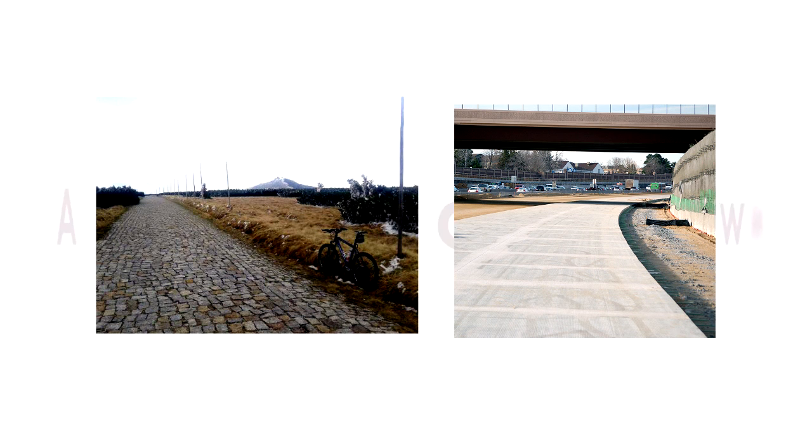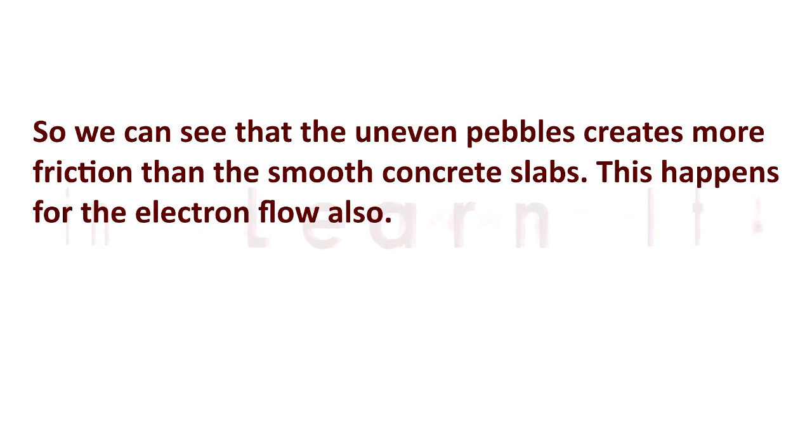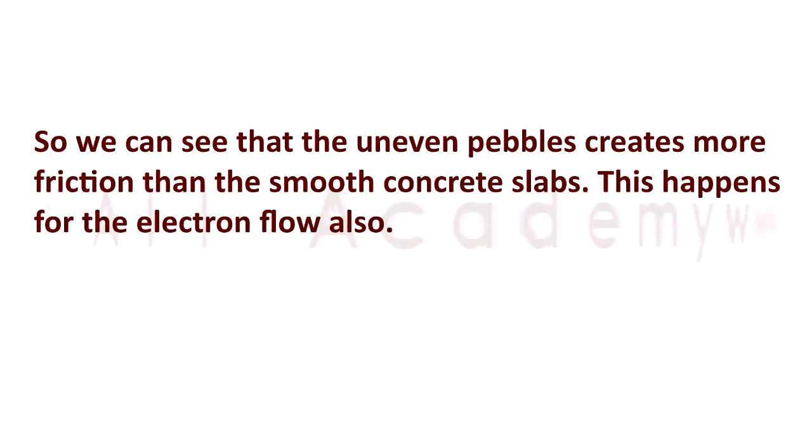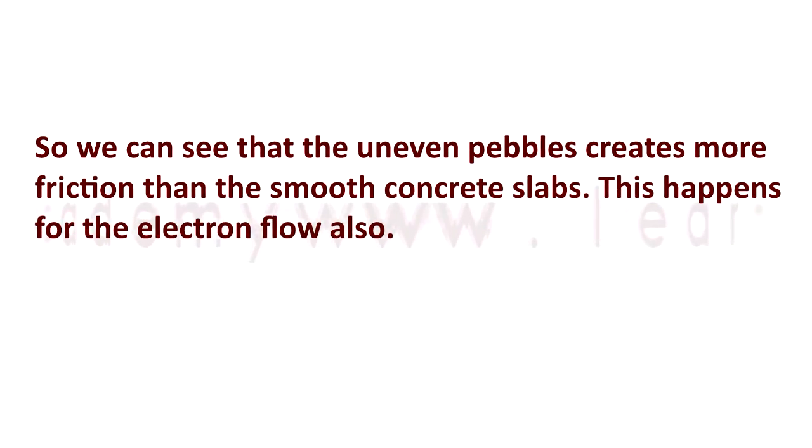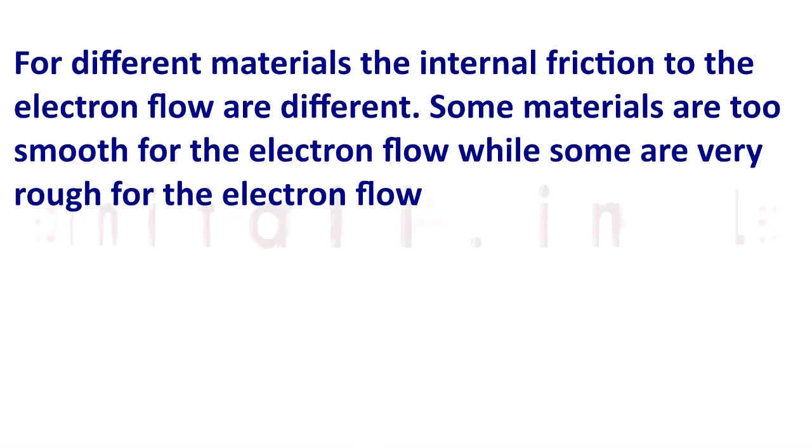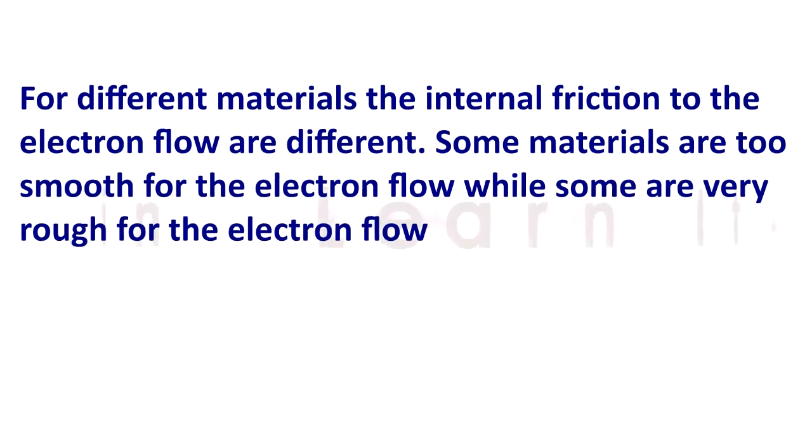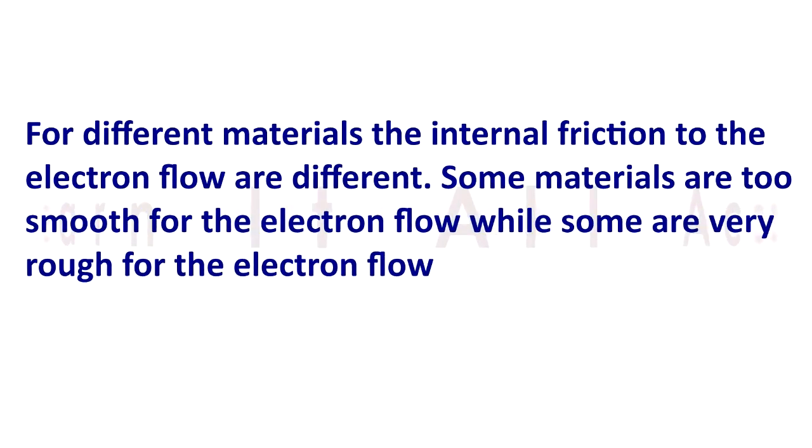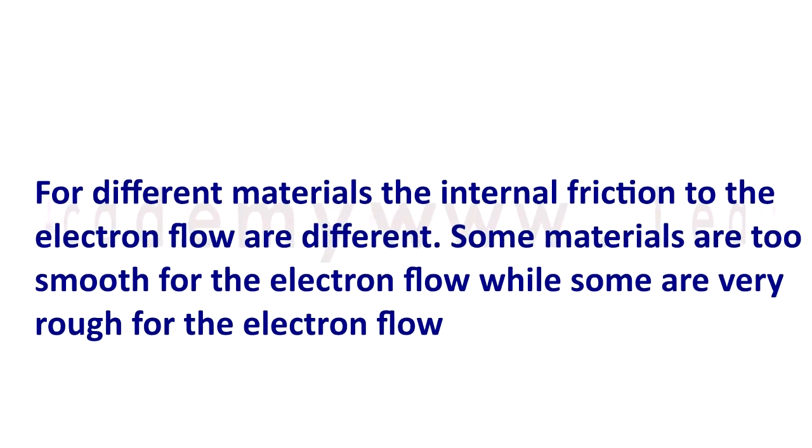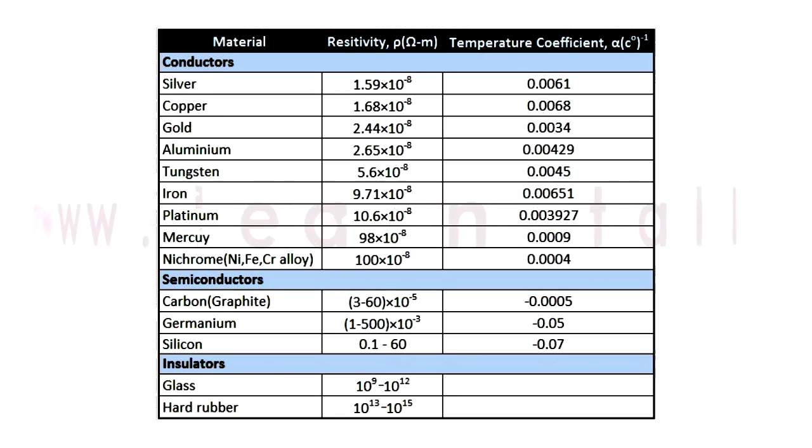Now think, will the friction be the same for a smooth concrete road and an uneven road made by pebbles? No, it will differ. So we can see that the uneven pebbles create more friction than smooth concrete slabs. This happens for the electron flow also. For different materials, the internal friction to the electron flow are different. Some materials are very smooth for the electron flow while some are very rough for the electron flow. We call this the resistivity of the material.